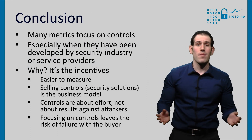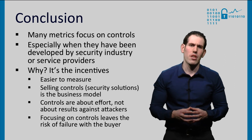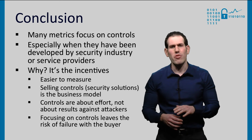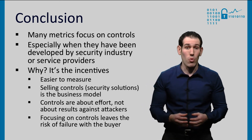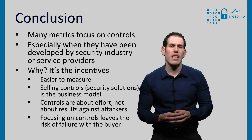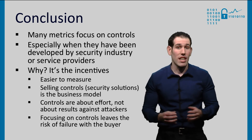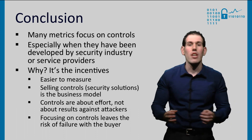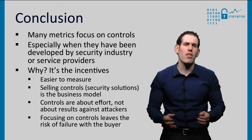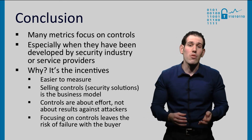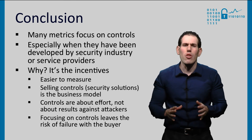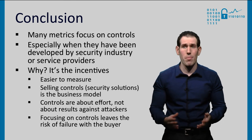To conclude, we have seen that the examples focus mostly on controls, especially when they have been developed by the security industry or service providers. Why is that? It's about the incentives. Controls are easier to measure — they are deterministic in nature. Selling controls is their business model, so they don't have proper incentives to take the threat environment into account. On the other hand, controls are about effort, not about results against attackers, and focusing on controls shifts the risk of failure onto the buyer.